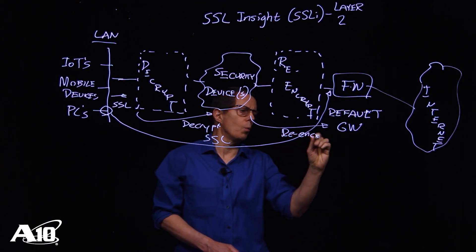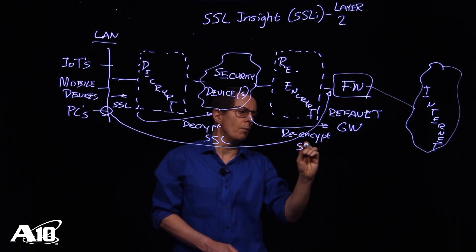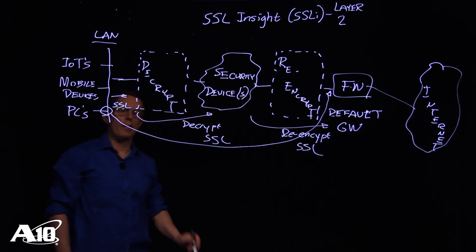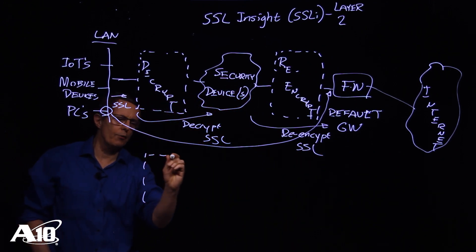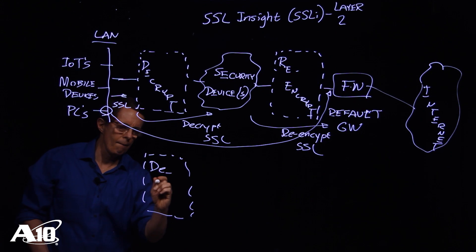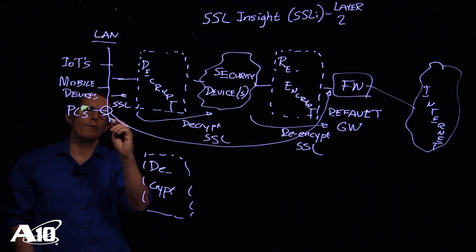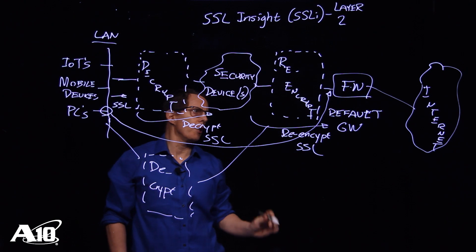Now what about failover? What about redundancy? Simple. What we've got to do is add another decryption device which will be fed off the local area network into the security chain.